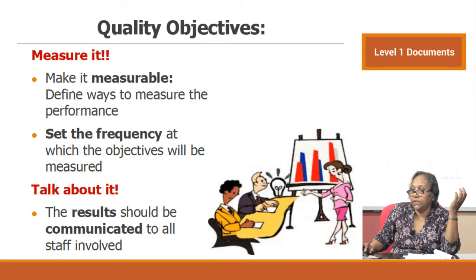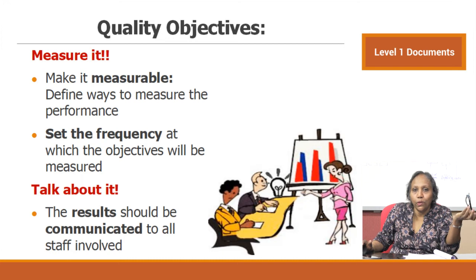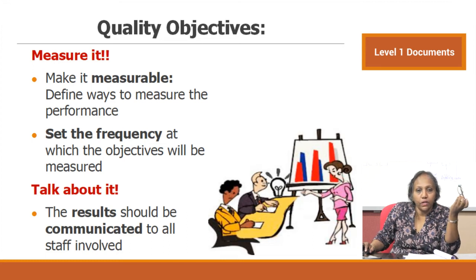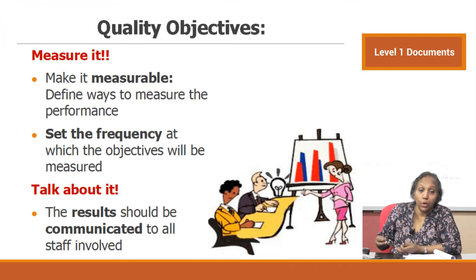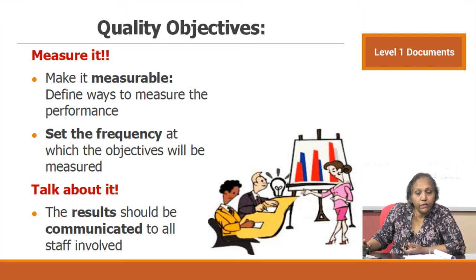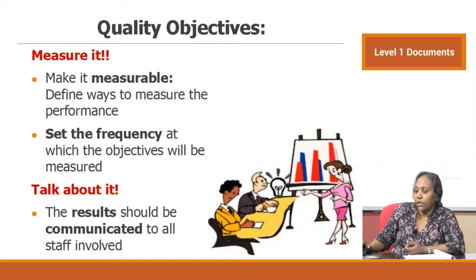Make objectives measurable — define ways to measure performance and set the frequency at which objectives will be measured. Most labs set quality objectives on an annual basis, but you need to measure progress more frequently, perhaps quarterly. This measurement should be done by management. Management and technical staff should sit together and understand whether there is progress toward objectives or whether progress has stalled. Results should be communicated to all staff involved.